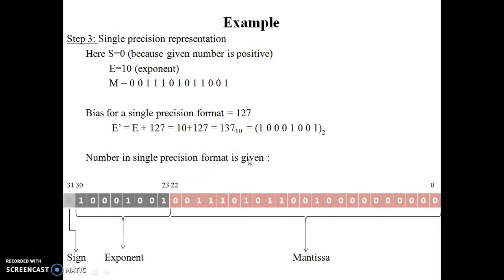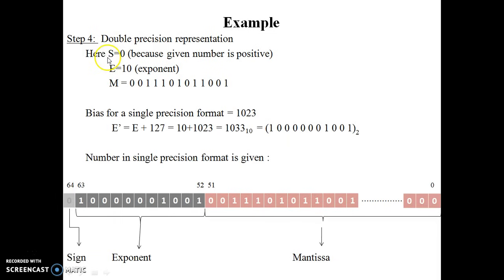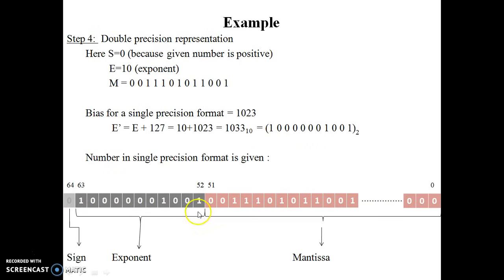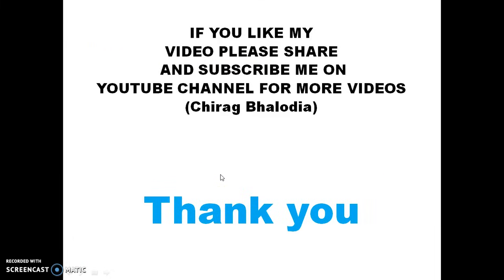Step four: convert into double precision representation. Our number is positive so S equals zero. Exponent equals 10 plus bias 1023, so E dash equals 1033, which is converted into binary and placed in the 11-bit exponent field. The mantissa bits are placed in the remaining 52-bit field, and the rest are padded with zeros. Thank you friends — if you like my video please share and subscribe to my YouTube channel for more videos.